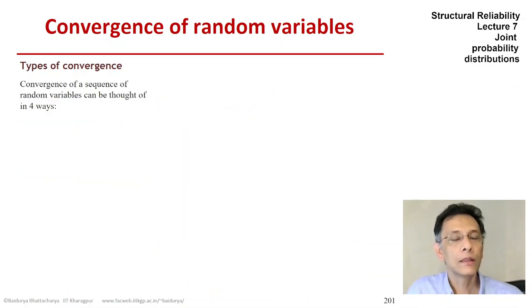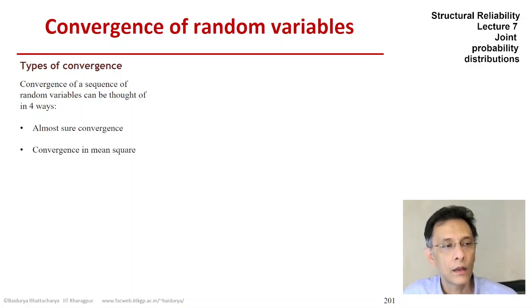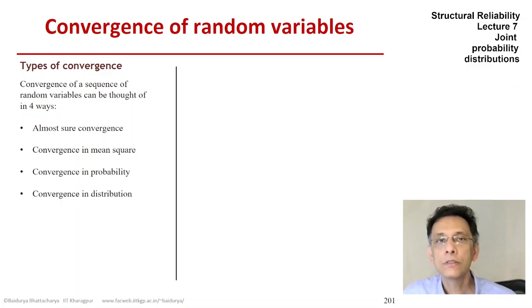So there are four ways that we can think of a sequence of random variables converging. And those four ways are almost-sure convergence, convergence in mean square, convergence in probability, and convergence in distribution. And in the end, we'll discuss the hierarchical relation between pairs of these.